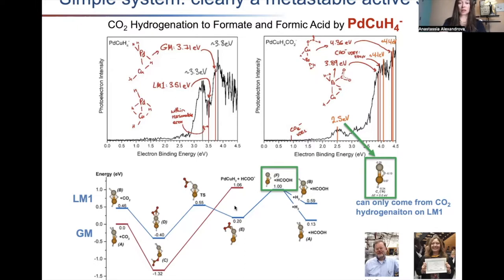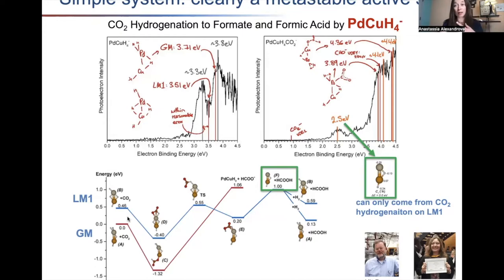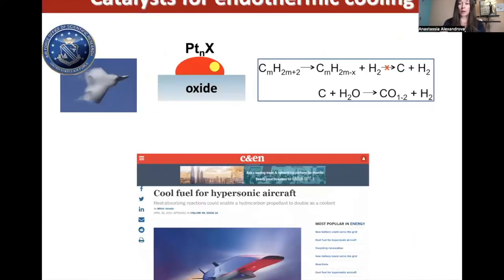We found the global minimum has a catalytically incompetent reaction profile — really not catalytic, very hindered kinetically. LM1 has a flatter, nicer reaction profile, and on that profile we find a species with a photo-detachment energy of 2.5 eV, which we took as a signature that this is the catalytic profile. Therefore LM1 and not the global minimum is the catalytic moiety — the active site for CO2 reduction to formate or formic acid.